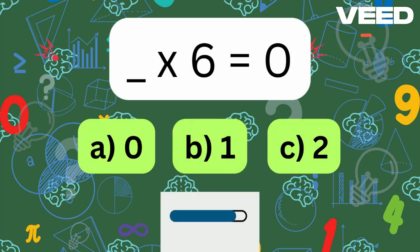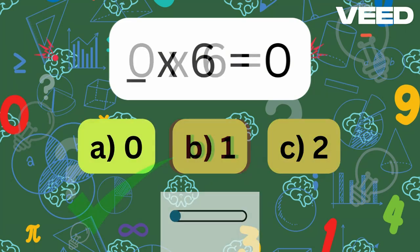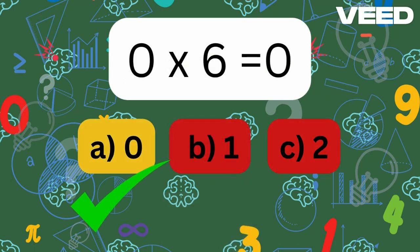What times 6 is equal to 0? 0x6 is equal to 0.